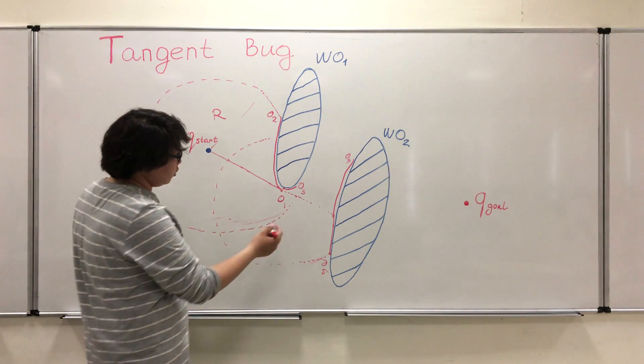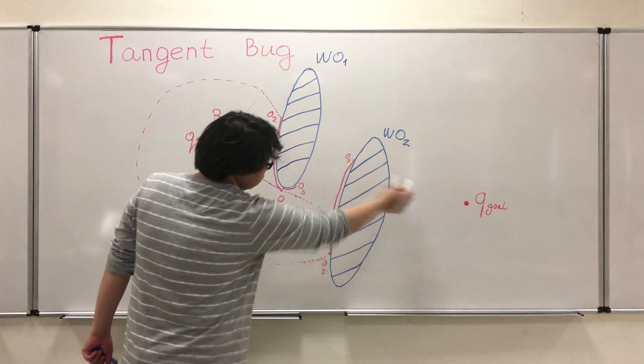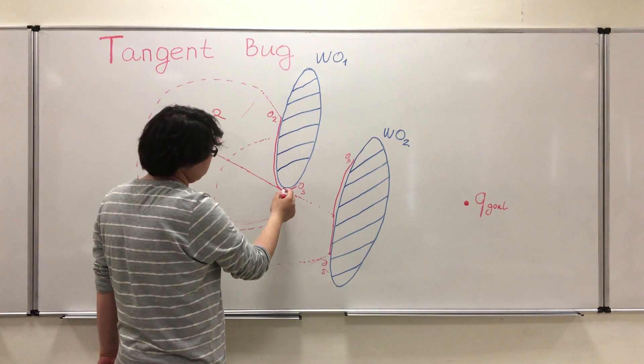We can see that this point is closest to the goal. And the robot will go there.